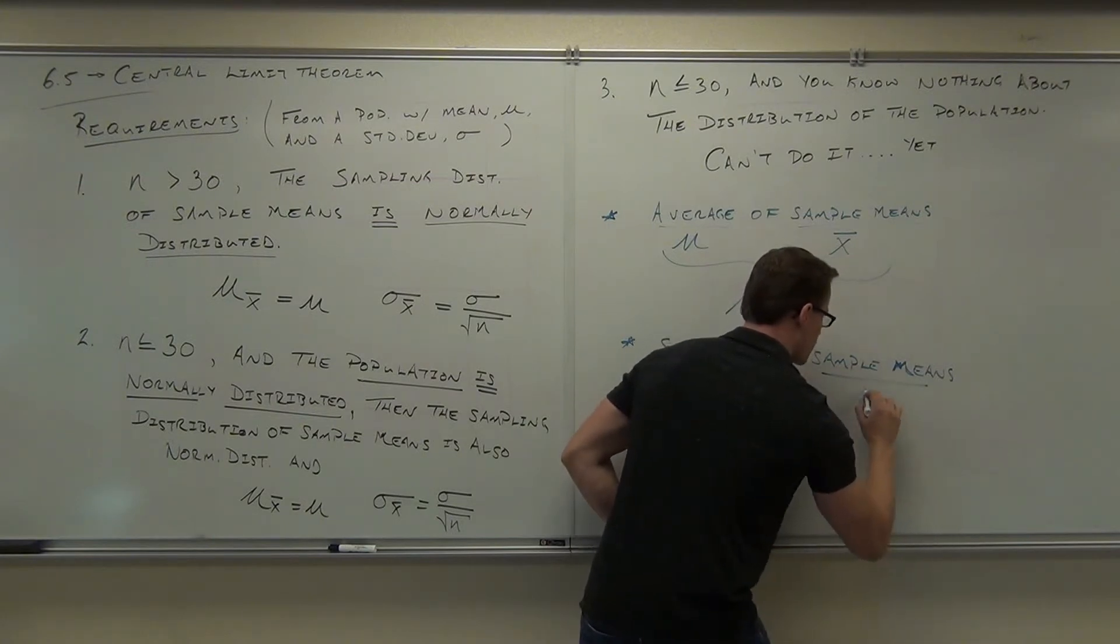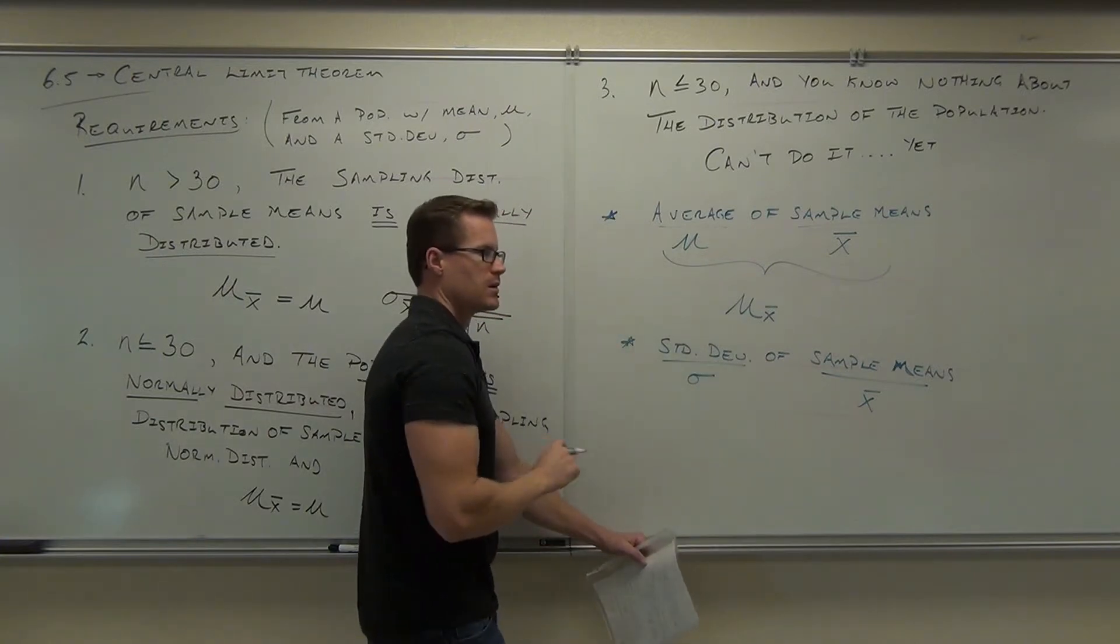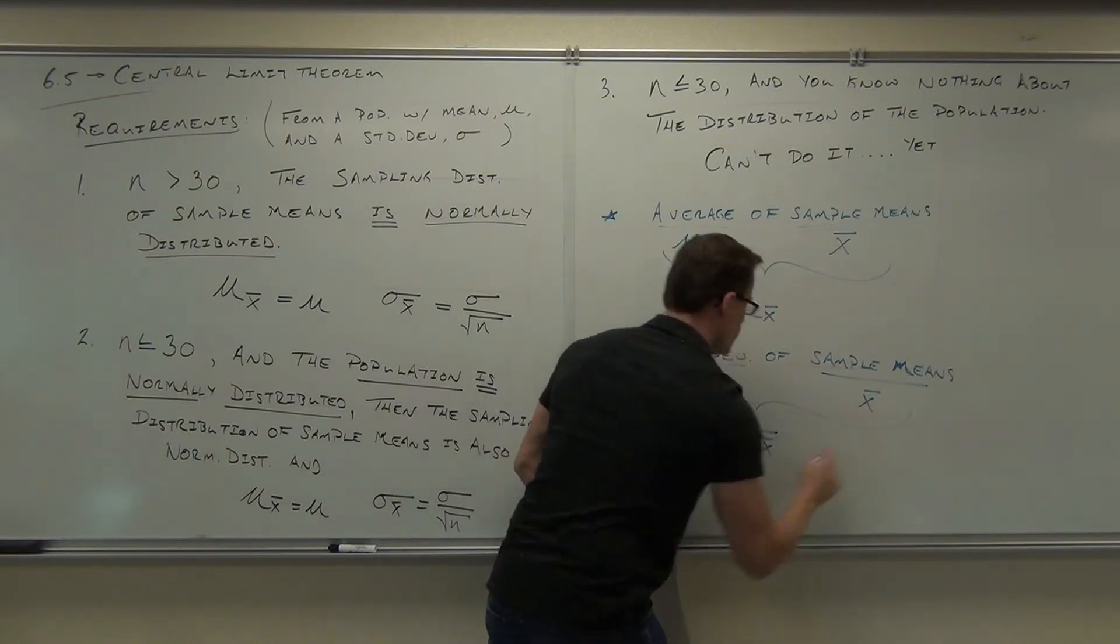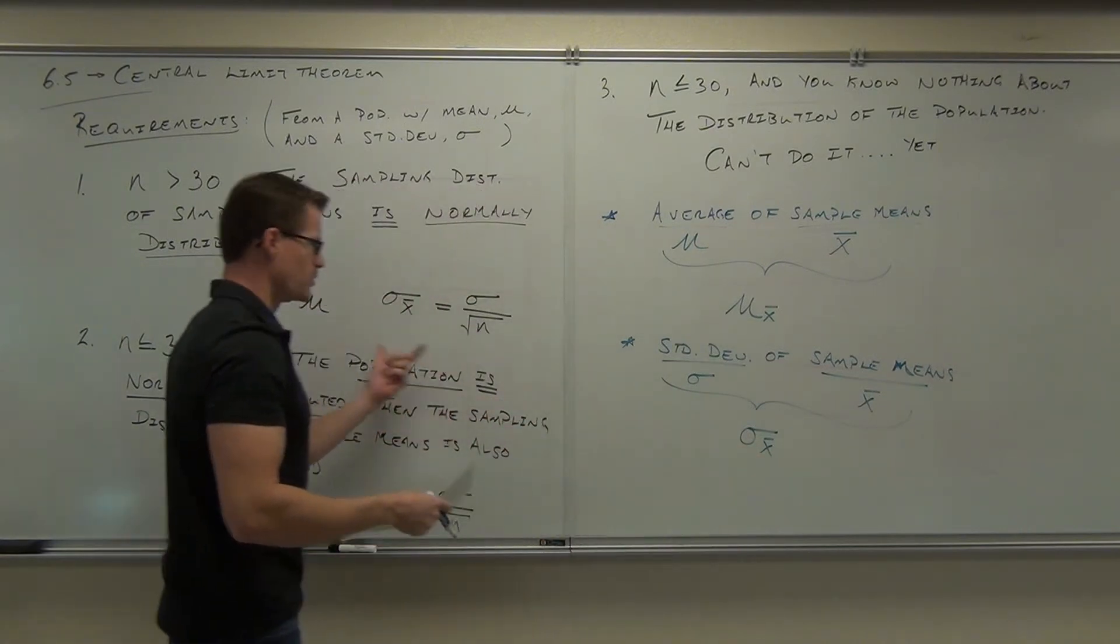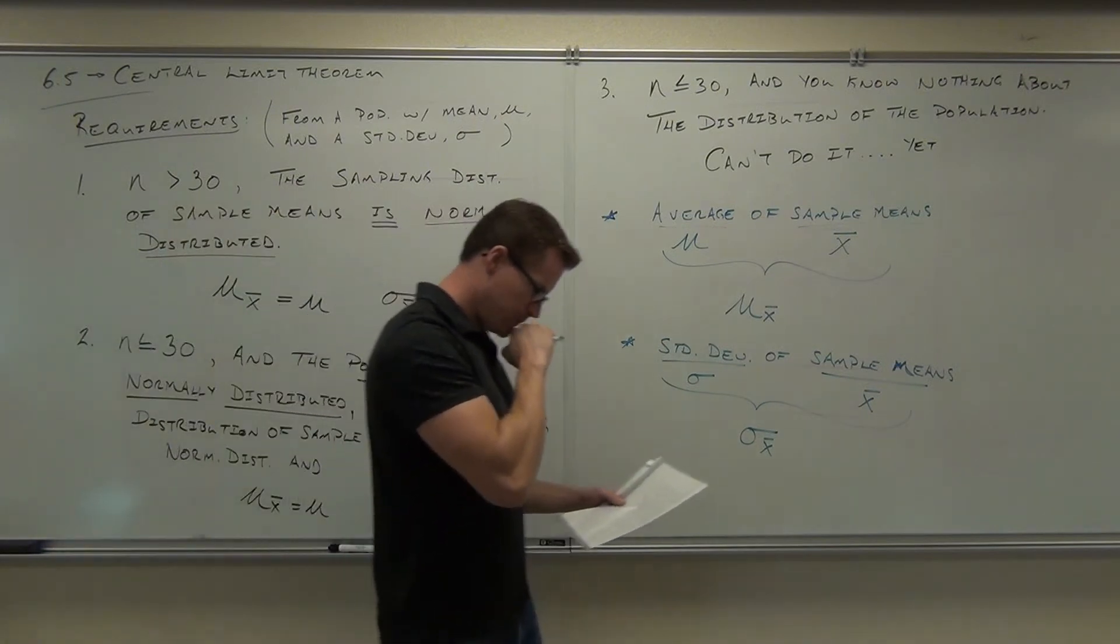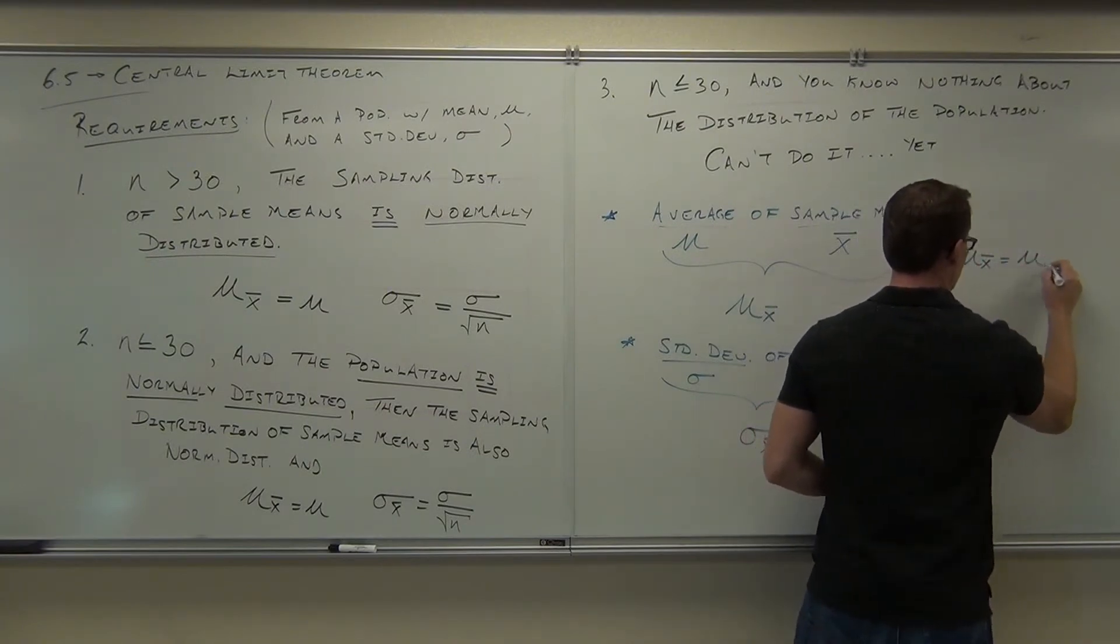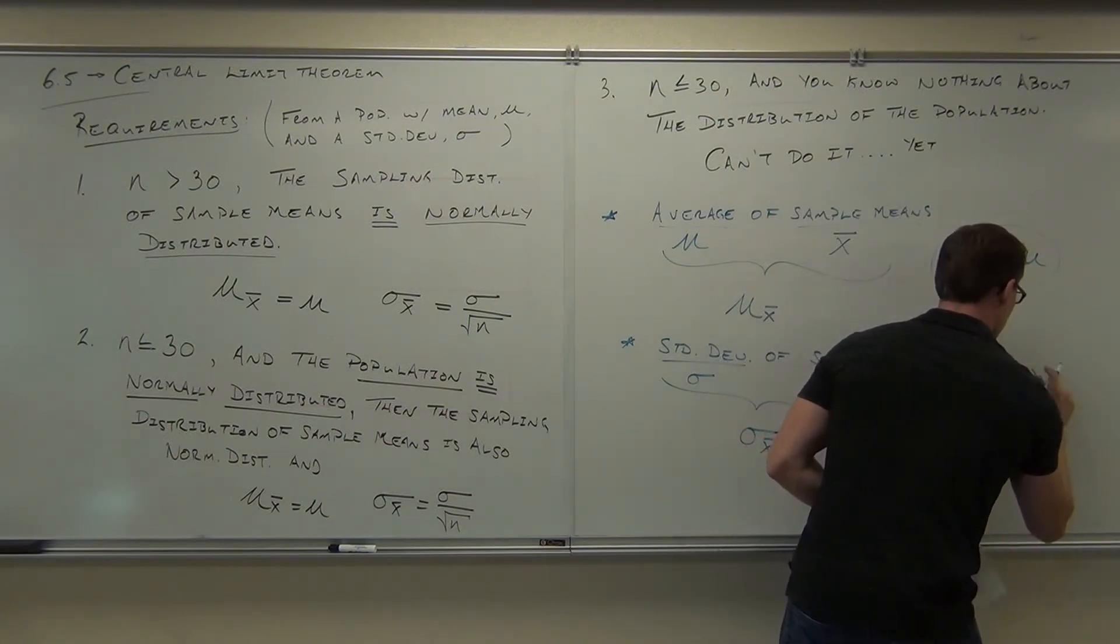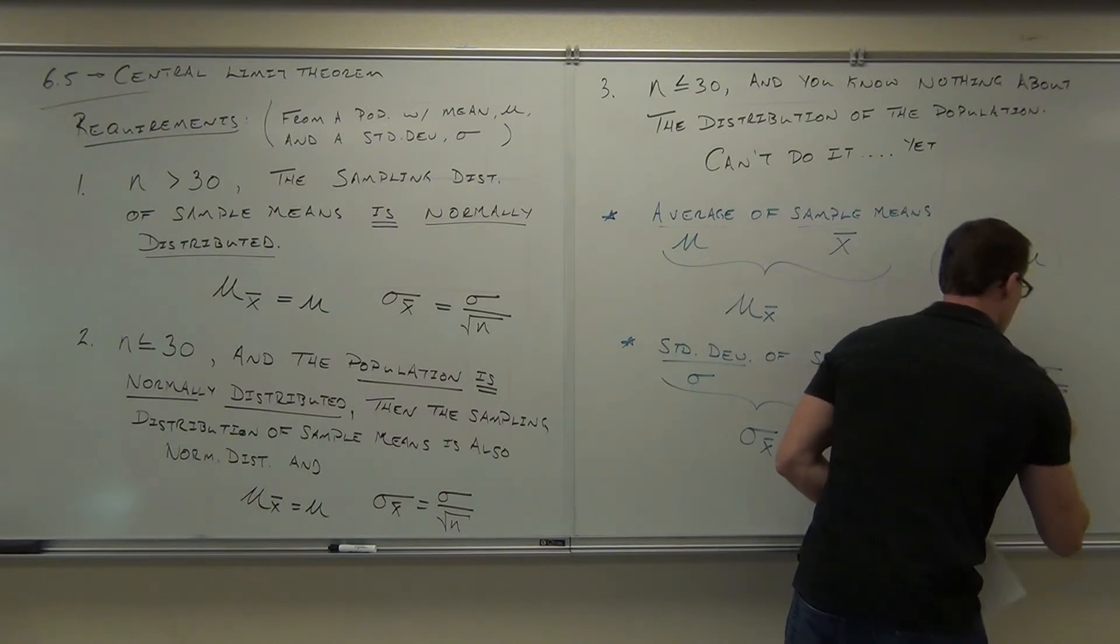The standard deviation of sample means. Again, sample means is x bar. Standard deviation is sigma. The standard deviation of sample means, that's this one. This is the standard deviation of your sample means. That's where those symbols are coming from. It kind of tells you what they are. Standard deviation of sample means, we know it's this thing. The meaning of our sample means, we know it's that thing. By the way, this, that's always true. We know we have that. And this is also true.